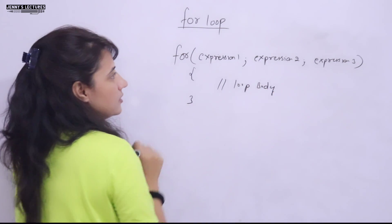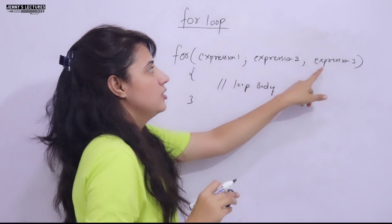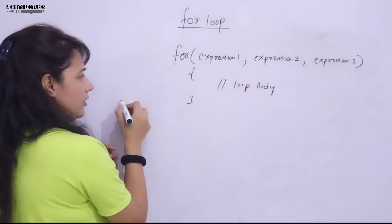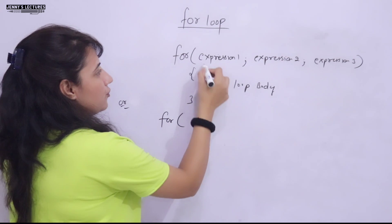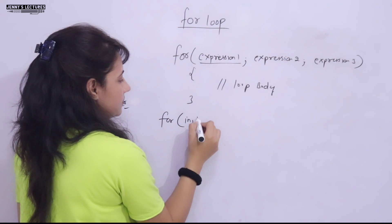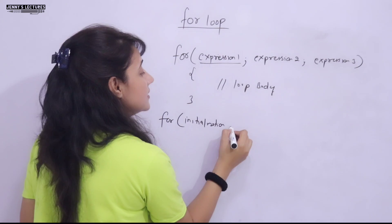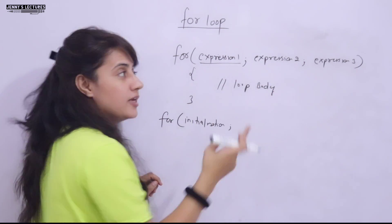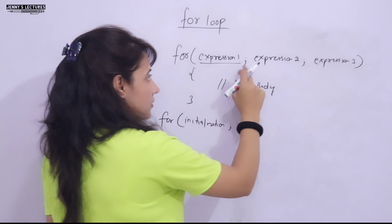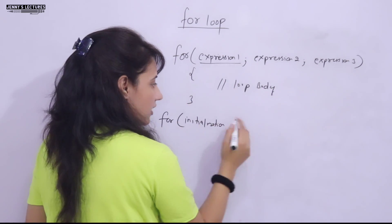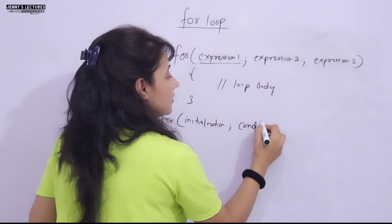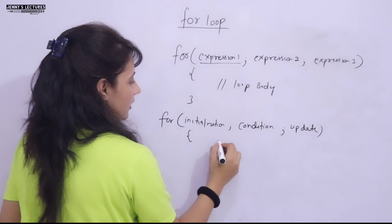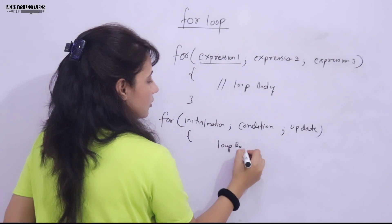Inside the parentheses: the first expression is initialization, then a semicolon — many beginner students mistakenly put a comma rather than a semicolon here. Then the termination condition, again a semicolon, and then the update expression. After the parentheses comes the loop body. These two semicolons are compulsory.